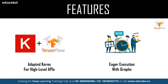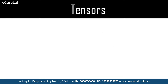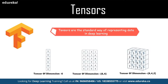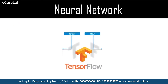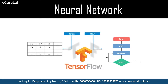TensorFlow's name is directly derived from its core framework: all computation involves tensors. A tensor is a vector or matrix of n dimensions that represents all the data types. All operations are connected inside a graph — a set of computations that take place successively. Each operation is called an op node. TensorFlow allows developers to create dataflow graphs describing how data moves through a series of processing nodes, where each node represents a mathematical operation and each edge is a multi-dimensional data array, or tensor.